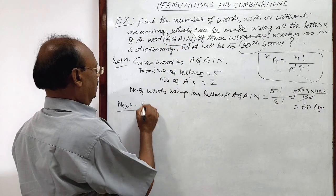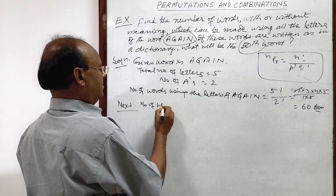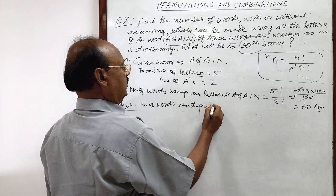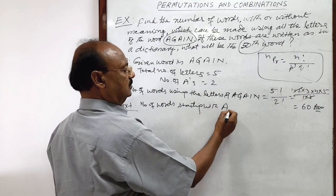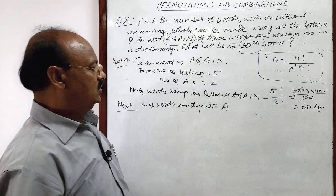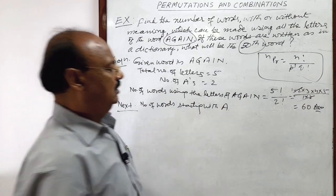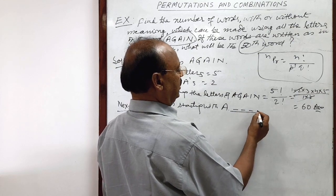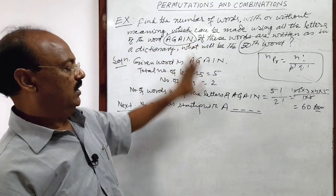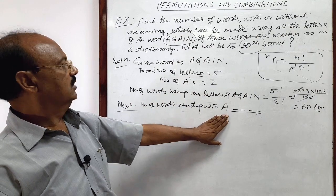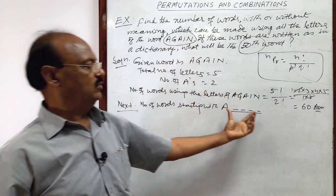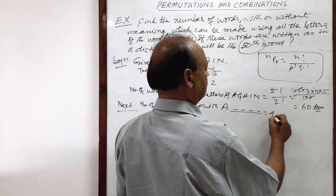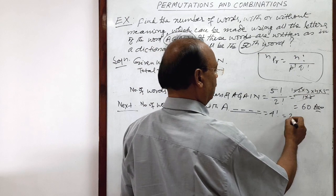Number of words starting with A, how many? Let us calculate it. If we are starting with A, then here we have to use 4 letters 1, 2, 3, 4. Total number of letters is 5 and we are starting with A. So remaining 4 letters will be arranged here. In how many ways? 4 factorial ways. And 4 factorial is equal to 24.